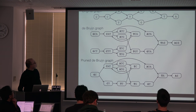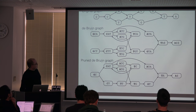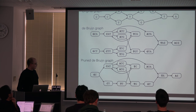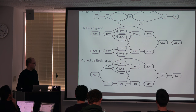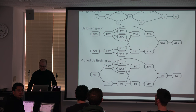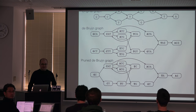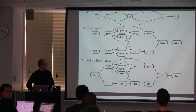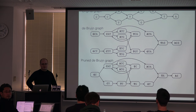So the top graph is the original graph, then we have the de Bruijn graph, then we have pruned it, which makes it smaller and simpler. In most places, we only need two bases to uniquely determine the position. We're actually indexing not the de Bruijn graph, but the pruned de Bruijn graph.